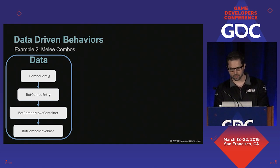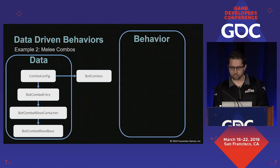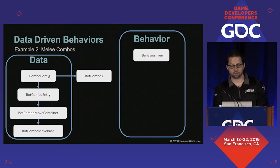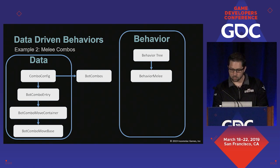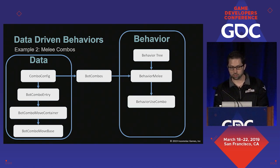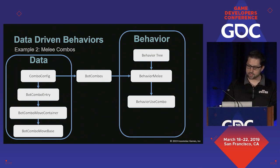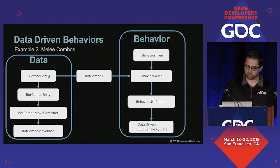On the behavior side, we have our behavior tree which can instantiate, for example, behavior melee. When it is time to attack, this behavior will pass data from bot combos into a behavior use combo, which will then use that data to start a sub-behavior or state. For the next several slides I will be showing examples of structs written in a proprietary C++-like data definition language — I'll mark any usage of it with DDL.